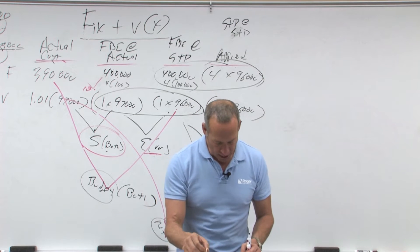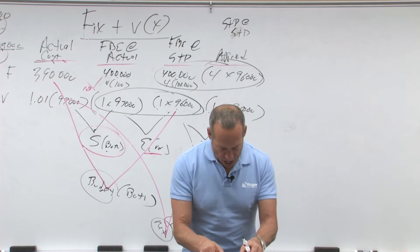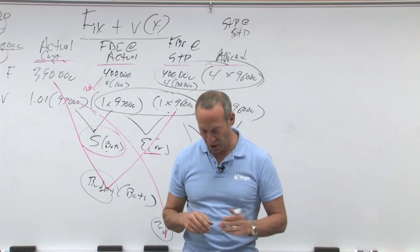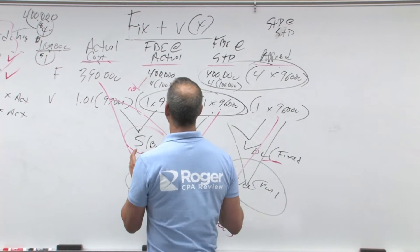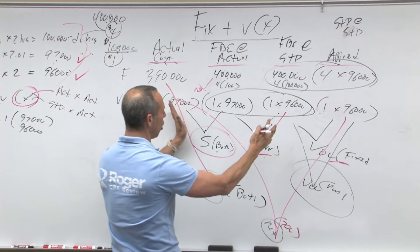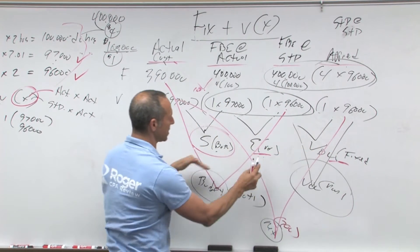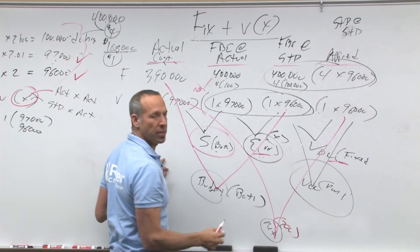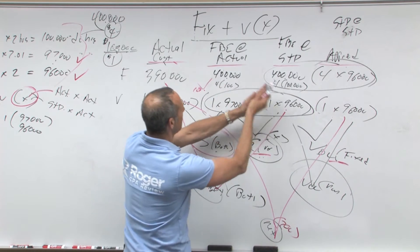Let's read that again. Unfavorable variable overhead efficiency variance. That's this efficiency, and they're saying it's unfavorable, negative. That means this has got to be bigger than this.